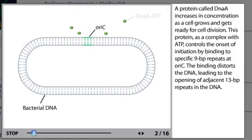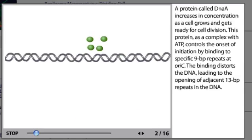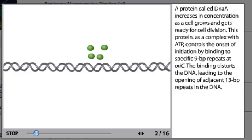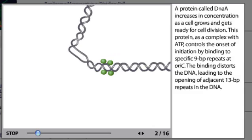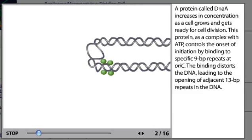A protein called DnaA increases in concentration as a cell grows and gets ready for cell division. This protein, as a complex with ATP, controls the onset of initiation by binding to specific 9 base pair repeats at oriC. The binding distorts the DNA, leading to the opening of adjacent 13 base pair repeats in the DNA.